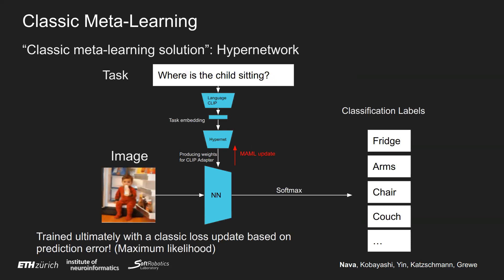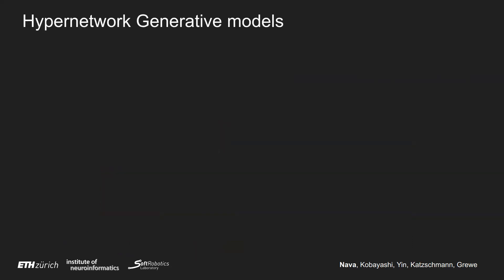If we wanted to take into account the question — the task information — we would use, for example, hypernetworks, in which we encode the question 'Where is the child sitting?' with a language CLIP encoder, and then feed it into a hypernetwork that produces the entire weights of the downstream neural network performing the classification. We could learn this hypernetwork with the same MAML update as before. Ultimately, this is trained with a classic loss update based on prediction error, maximum likelihood. What we want to do instead is approach hypernetworks from the point of view of generative modeling.